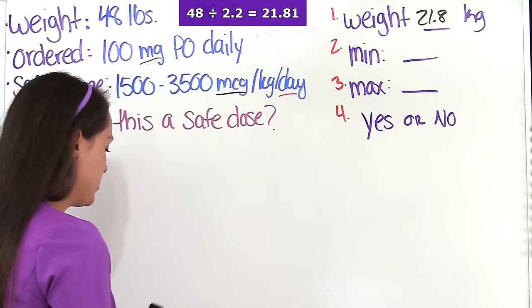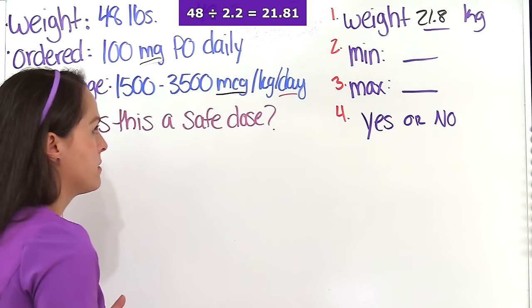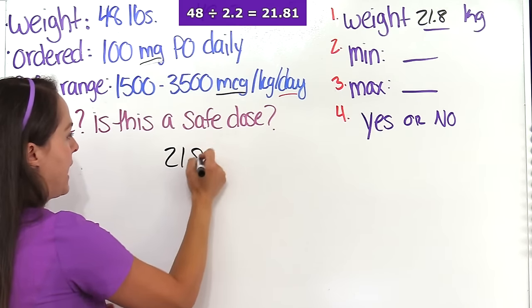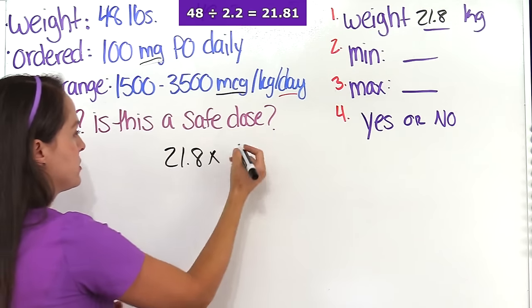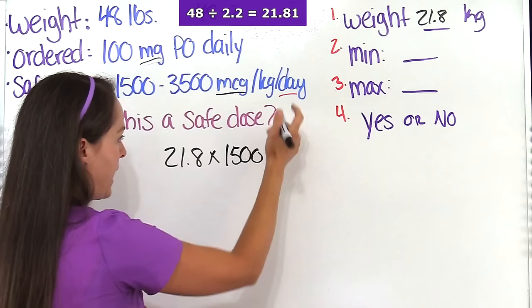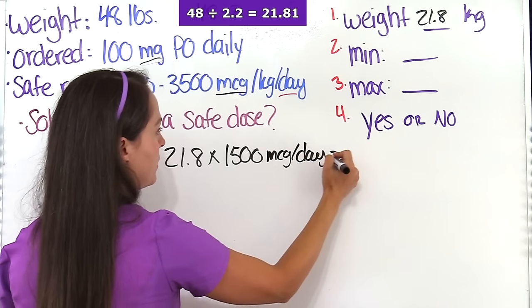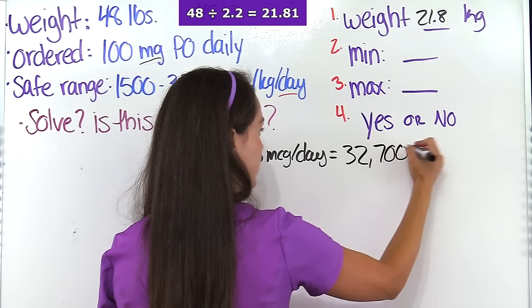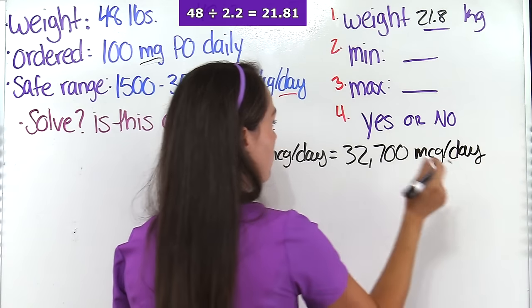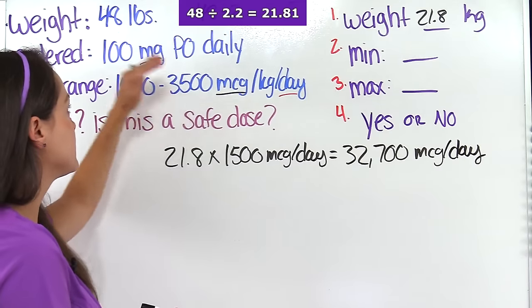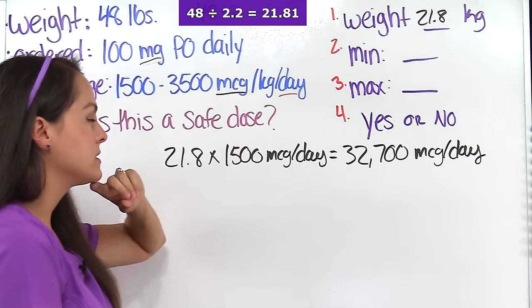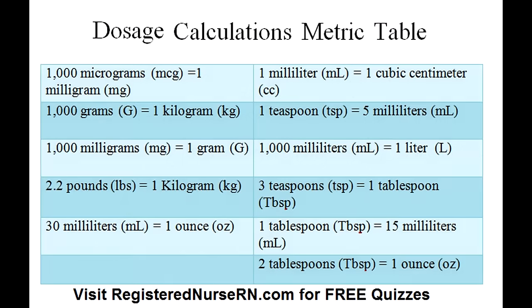Next we solve for the minimum. Using our formula, we plug in the patient's weight: 21.8 multiplied by 1,500 — that's the minimum amount in micrograms per day. When we multiply that out, we get 32,700 micrograms per day. We need to convert to milligrams, and since the patient receives this daily we don't need to divide out doses. We know one milligram equals 1,000 micrograms.